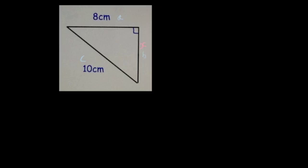Then I write down Pythagoras's theorem. So Pythagoras's theorem is A squared plus B squared equals C squared.